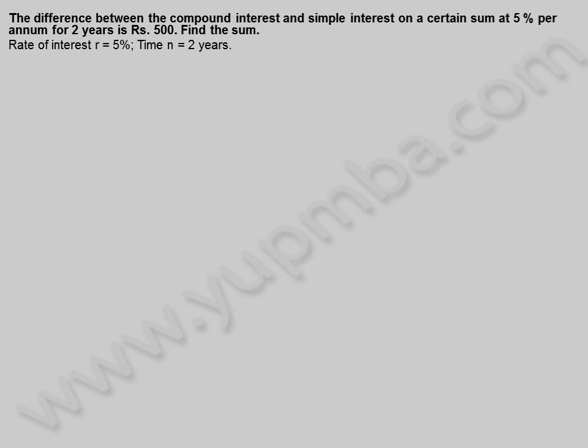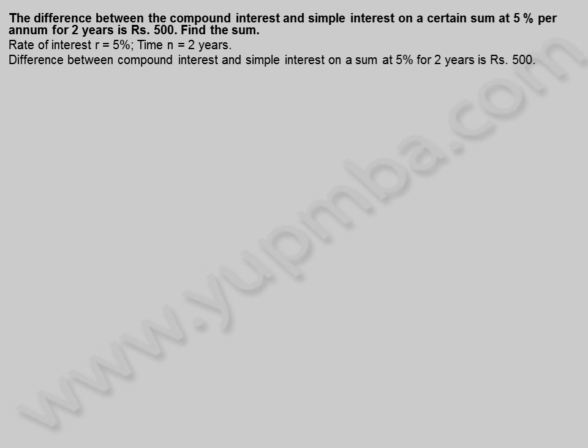The difference between the compound interest and simple interest on a certain sum at 5% per annum for 2 years is 500 rupees. Find the sum. Rate of interest R is equal to 5%, time N is equal to 2 years. Let the principle be X rupees.